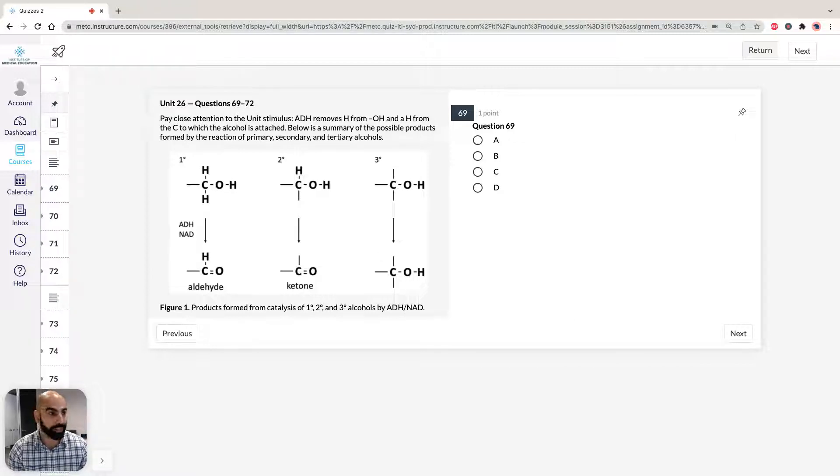In this unit, we're going to take a look at the oxidation of alcohols by the enzyme alcohol dehydrogenase, which is also catalyzed by the coenzyme nicotinamide adenine dinucleotide. Thank God they give us the acronym, so we've got ADH and NAD. It's important to know that the way the reaction works is that ADH removes hydrogen from the OH group on the alcohol and the H group directly attached to the carbon that is attached to the alcohol.